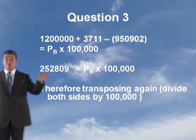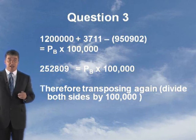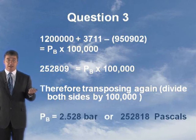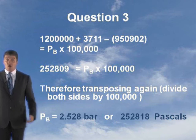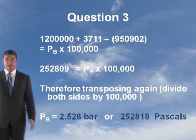Gives you 1,200,000 plus 3,711 minus the 950,902, and that gives you 252,809 equals PB times 100,000. All you do, divide both sides by transposition by 100,000. It gives you the pressure at B equals 2.528 bar or 252,818 pascals.